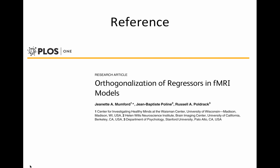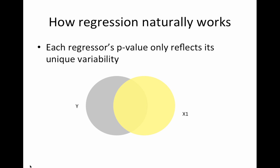These lectures are all following the paper in PLOS-1, 'Orthogonalization of Regressors in fMRI Models,' by myself, J.B. Poline, and Russ Poldrack. How does regression naturally work? It's a beautiful thing. Each regressor's p-value only reflects its unique variability.